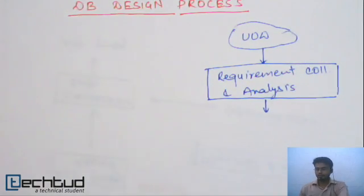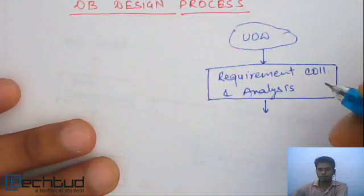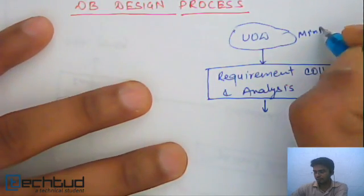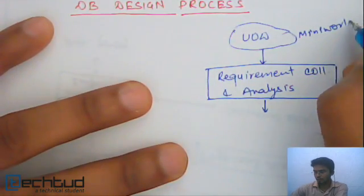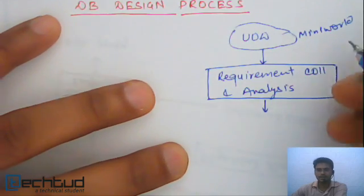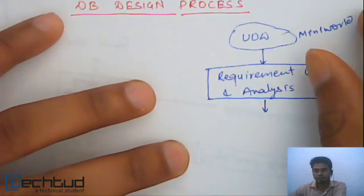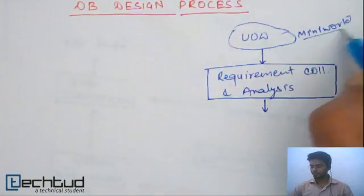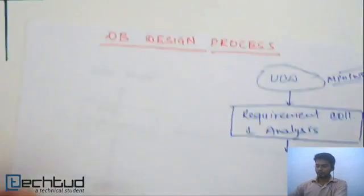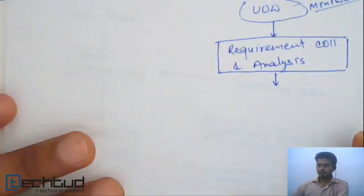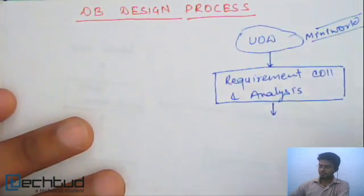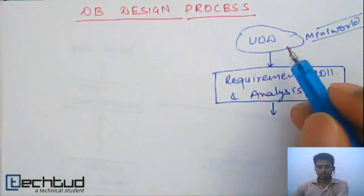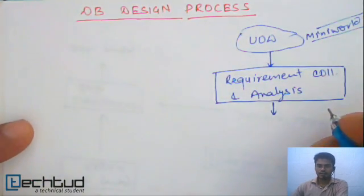If you are given a requirement, or universe of discourse, or what we call it as mini world — mini world because this is the world for my software design, this is my entire world. From the given circumstances or mini world or universe of discourse, we try to model data.